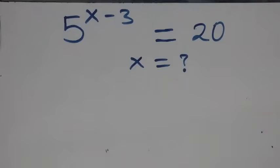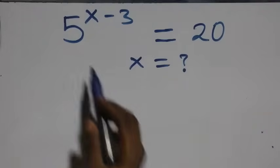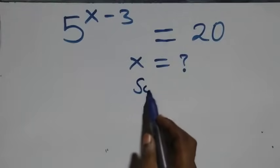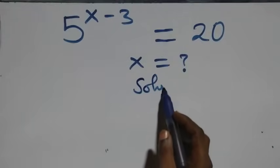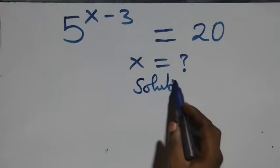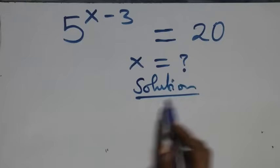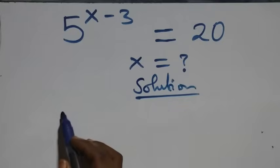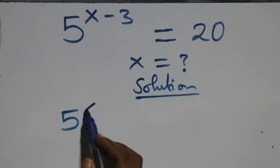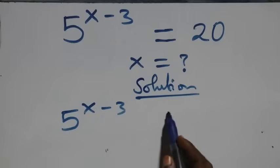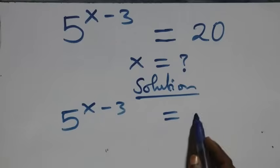Hello, you are welcome. How to solve this nice exponential equation. From what we have here, which is five raised to power x minus three equals to twenty.